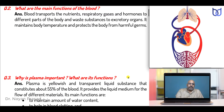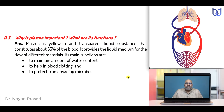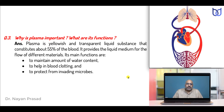Why is plasma important? What are its functions? Plasma is a yellowish and transparent liquid substance that constitutes about 55% of the blood. It provides the liquid medium for the flow of different materials. Its main functions include maintaining water content, helping in blood clotting, and protecting from invading microbes — germs which cause different types of infections. Blood plasma is the circulatory medium for different materials.